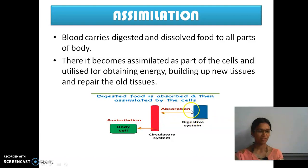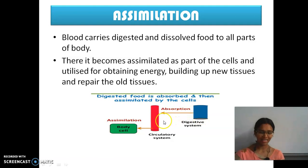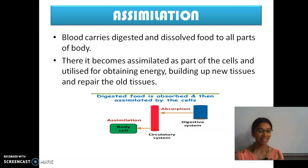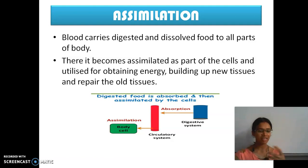The digestion process is completed in the digestive system. It is absorbed by the blood cells. The digested food is absorbed by the blood cells, then through the circulatory system it is transmitted to the body cells. That energy is supplied to the body cells, and the body cells use it for various purposes — giving energy to do work, building up new tissues, repairing old tissues, etc. That is assimilation.